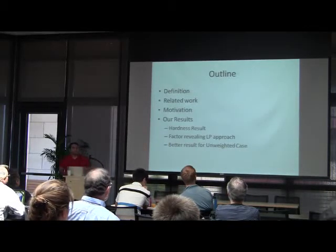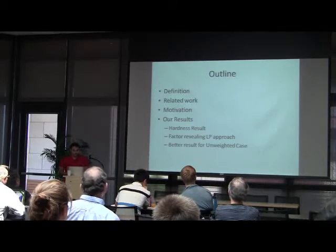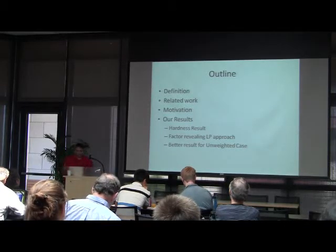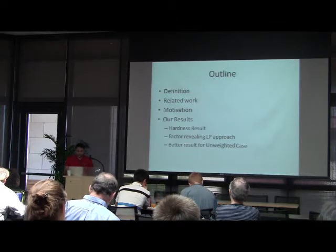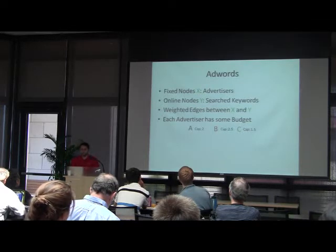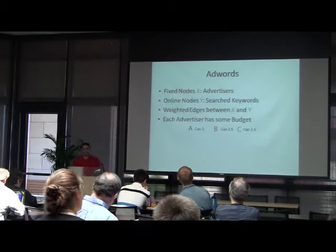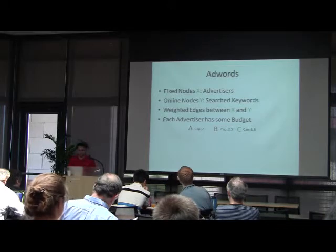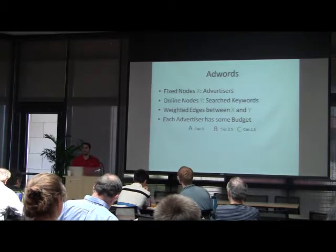First I'll define the problem, go over the related work, motivate the problem, and present our results. I'll be talking about the AdWords problem today. In this problem we have a fixed set of nodes X, which are basically the advertisers. They are given in advance, and we also have a set of online nodes which arrive one by one.